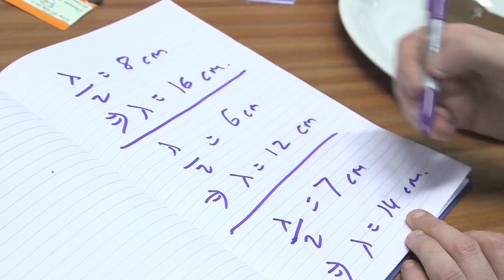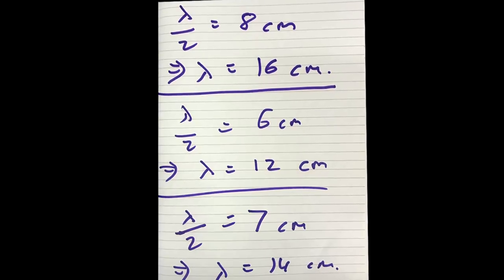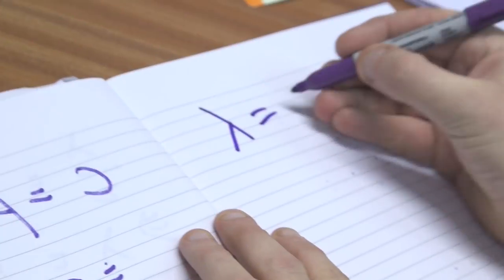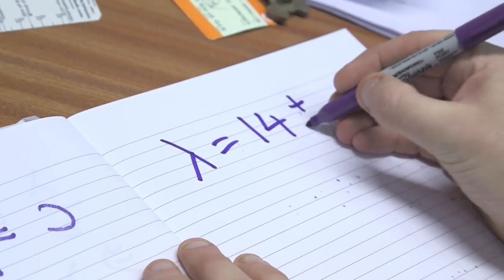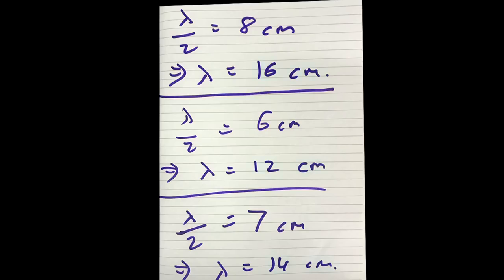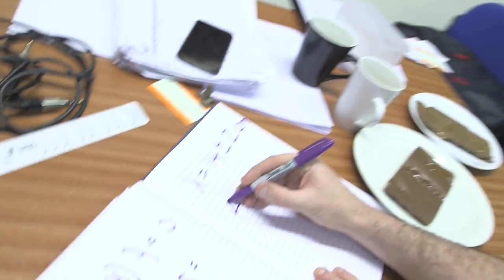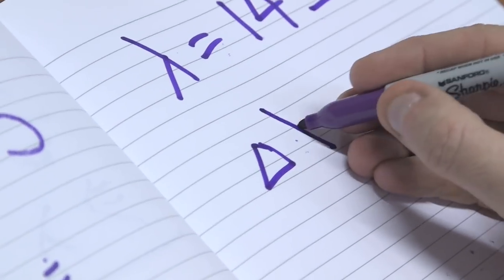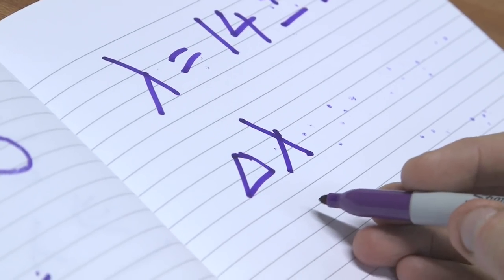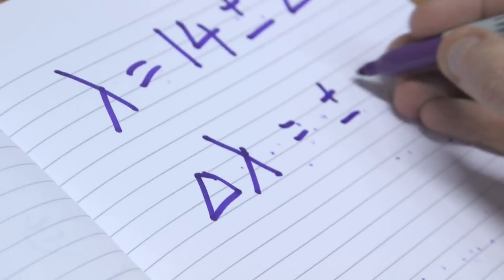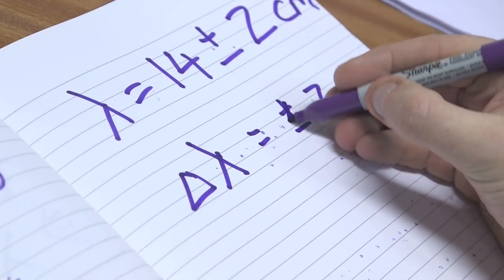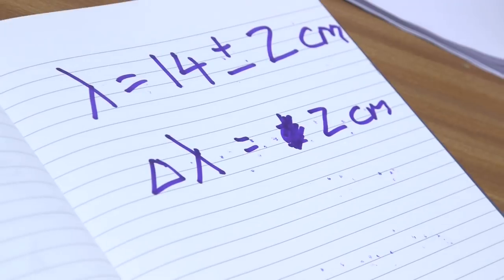We find that our values range from 12 through 14 to 16 centimetres. So our best value is 14 centimetres, and the best way to quote this is lambda equals 14 plus or minus 2 centimetres. Delta lambda — that's our error bar — is 2 centimetres.